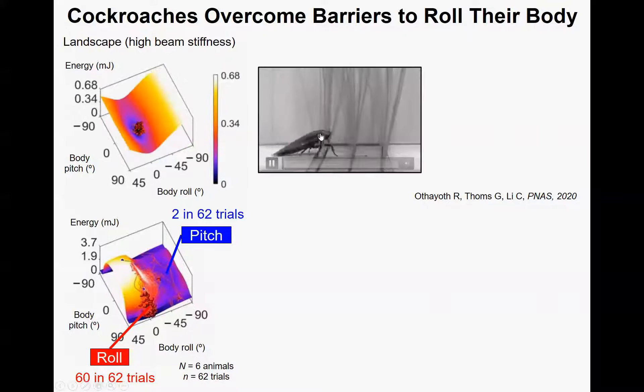In this video, you can see that when the cockroach is interacting with the beam, its body oscillated up and down very fast. In a previous study, we found that in a passive robot, the kinetic energy from body oscillation can help them overcome potential energy barriers.